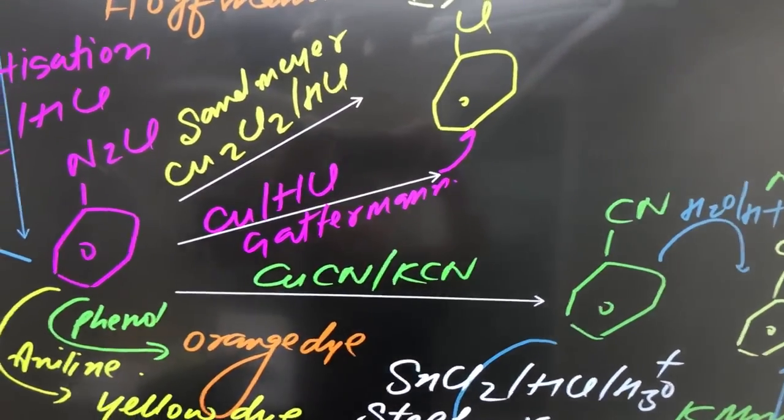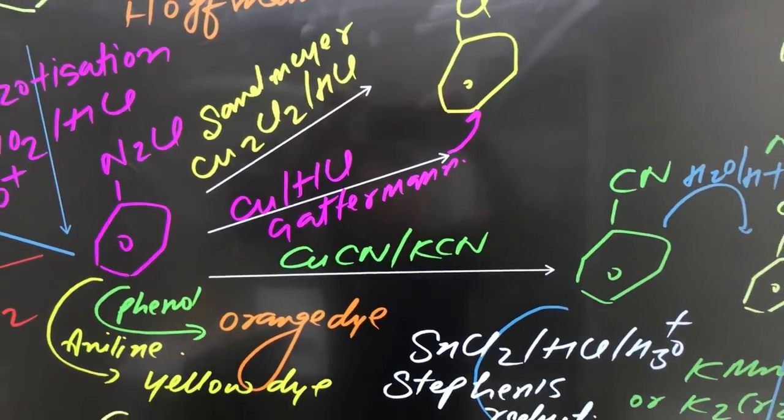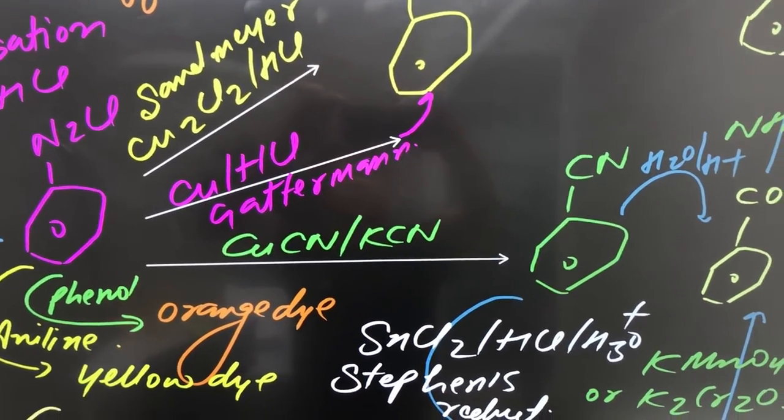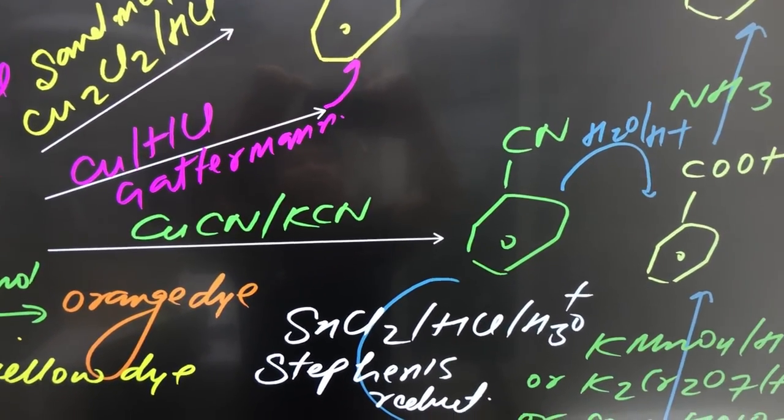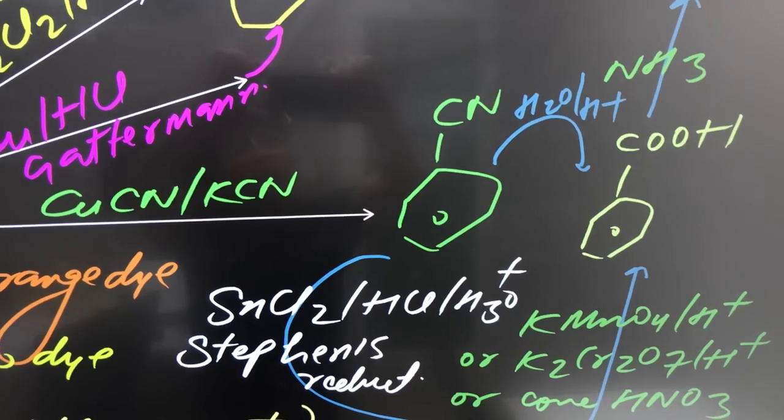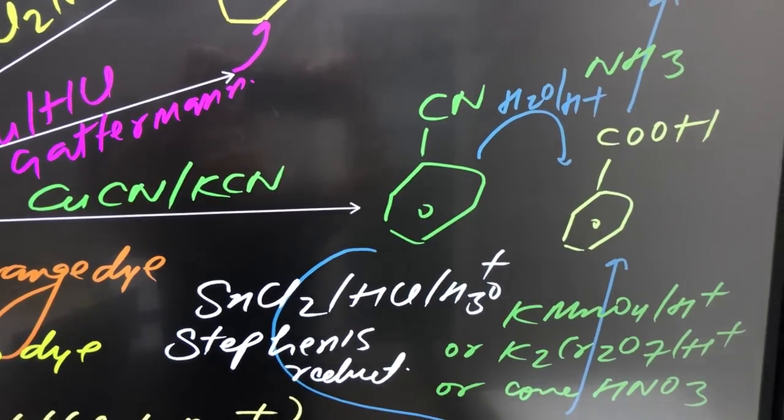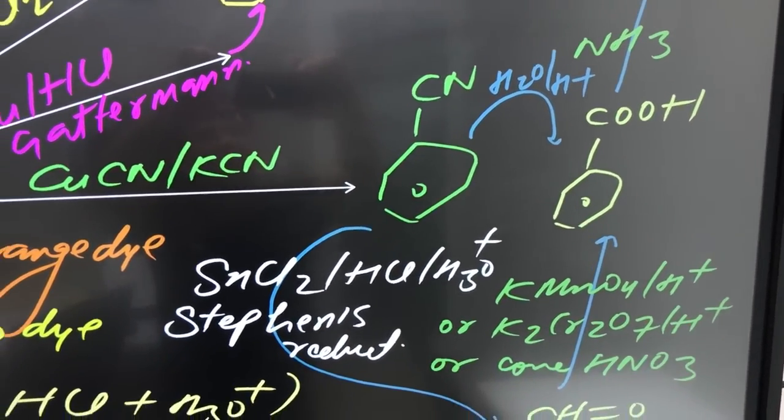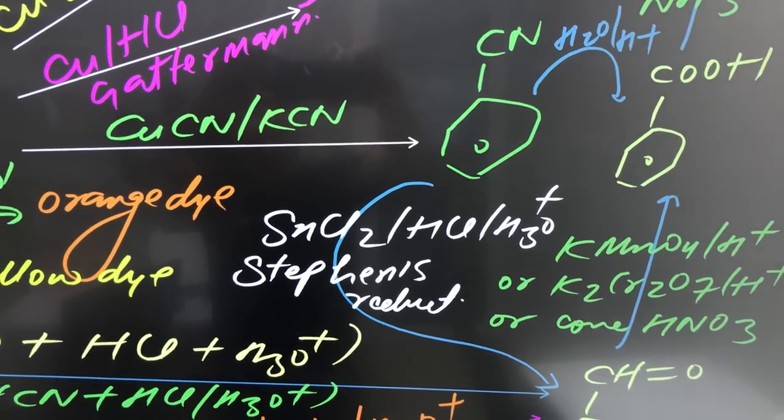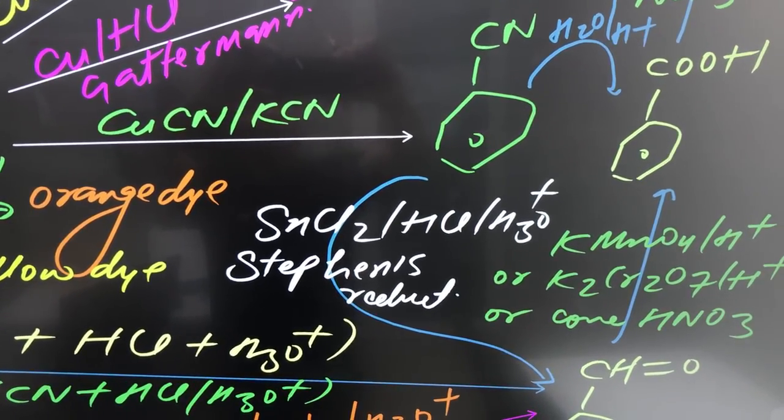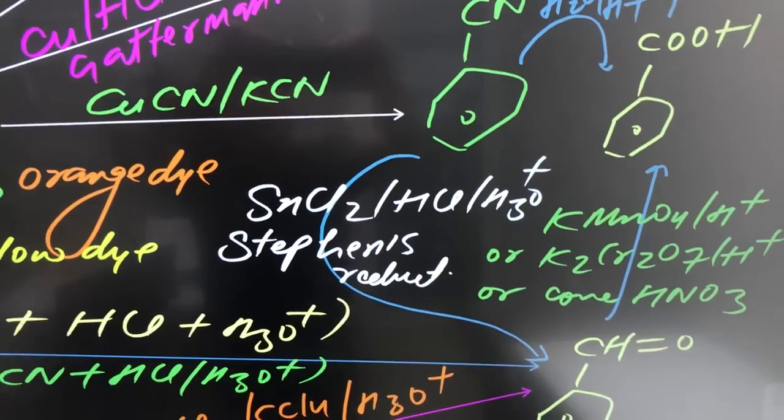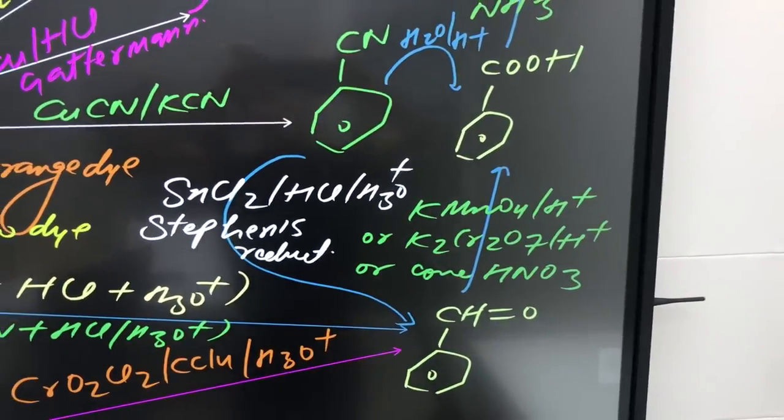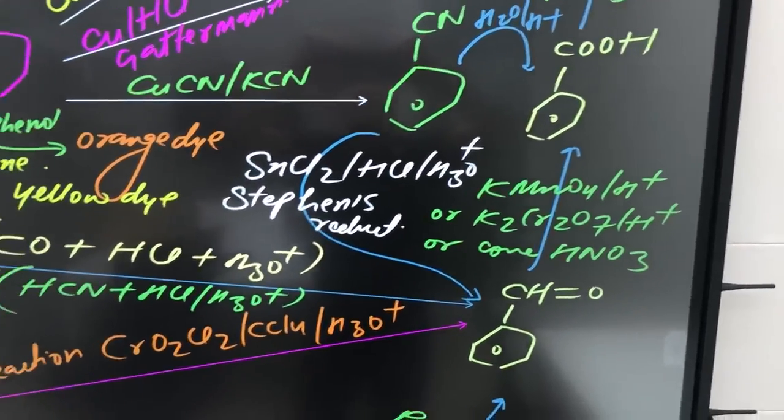Now we are going to react this benzene diazonium chloride with cuprous cyanide. What you will get in presence of CuCN is cyanobenzene, also known as benzonitrile. And if you are doing the hydrolysis of cyanobenzene in acidic medium, you will get benzoic acid. Whereas cyanobenzene on reaction with stannous chloride/HCl/H2O+, this is known as Stephen's reduction, partial reduction. This will convert cyanobenzene into benzaldehyde.